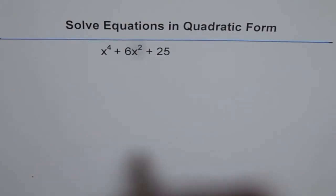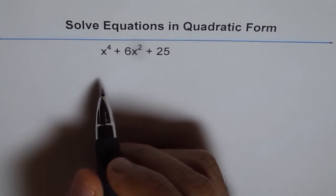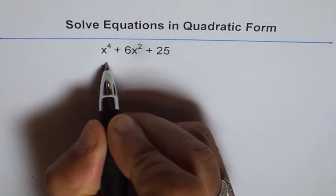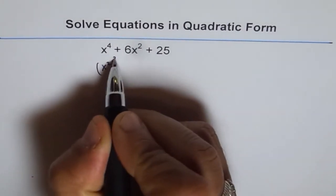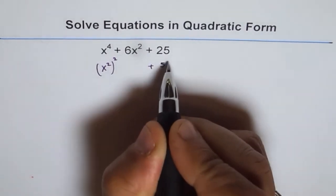Now, this expression cannot be factored directly. As you can see, it is very close to a perfect square. We can write x^4 as (x^2)^2, right? And we can write 25 as 5^2.